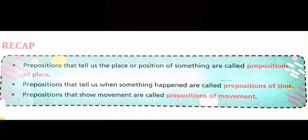Now let us recap this chapter. Prepositions that tell us the place or position of something are called prepositions of place. Prepositions that tell us when something happened are called prepositions of time. Prepositions that show movement are called prepositions of movement.